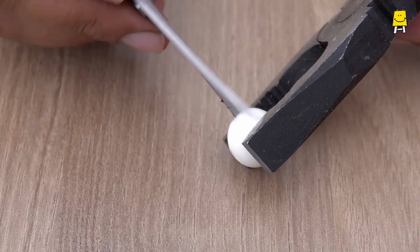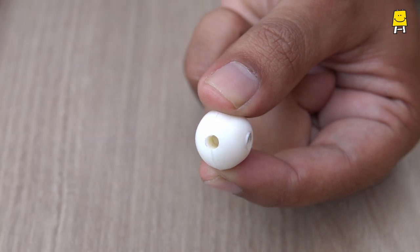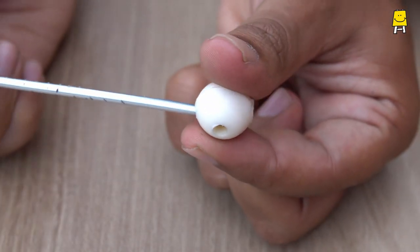Make four holes in the plastic bead with scissors. Each pair of holes should be opposite to each other.